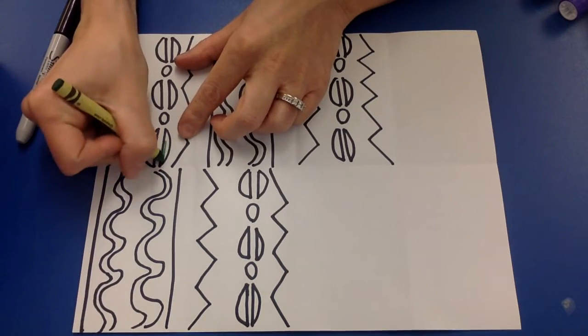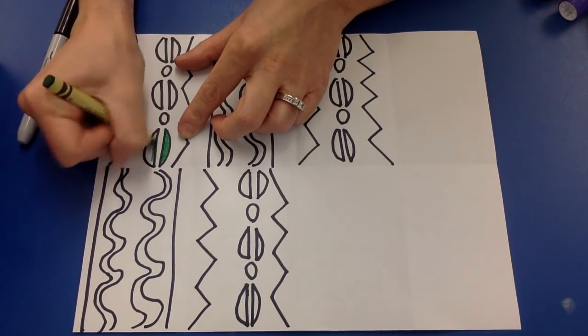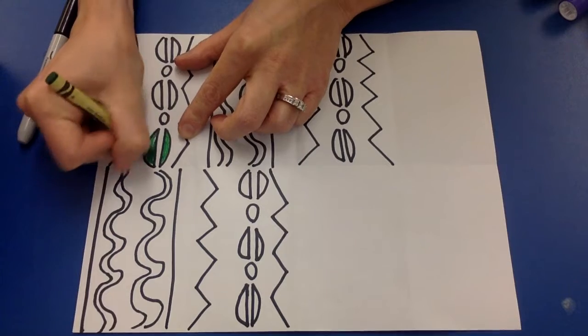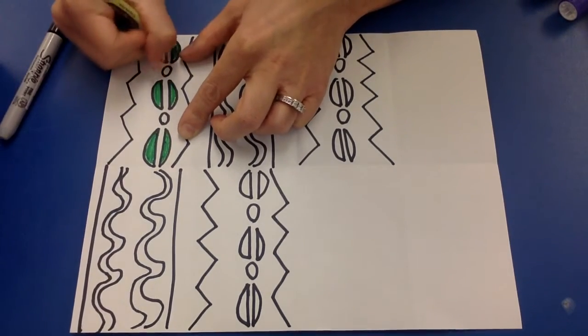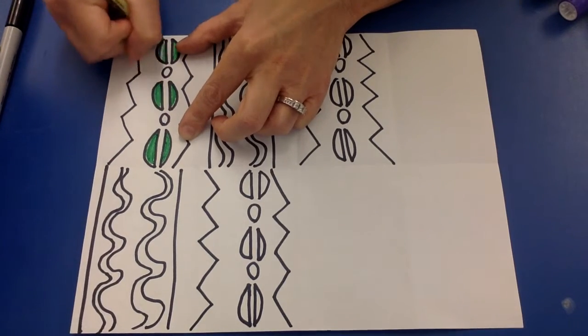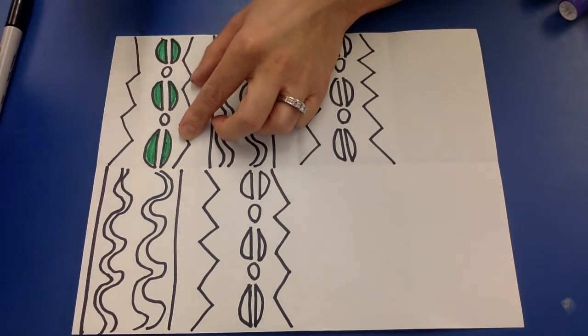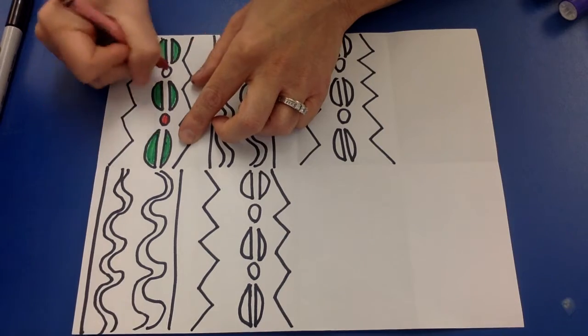So if I'm doing this coffee bean green, remember we hide the paper when we color. We're taking our time, you can do this with crayon, you can do this with marker, you can do it with colored pencil, you can mix and match.